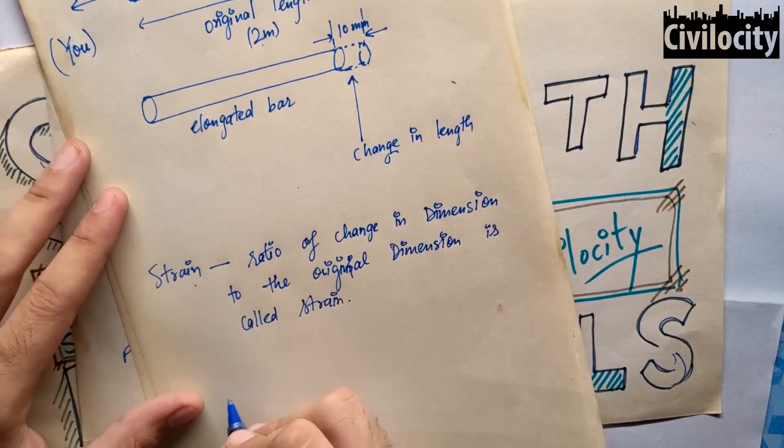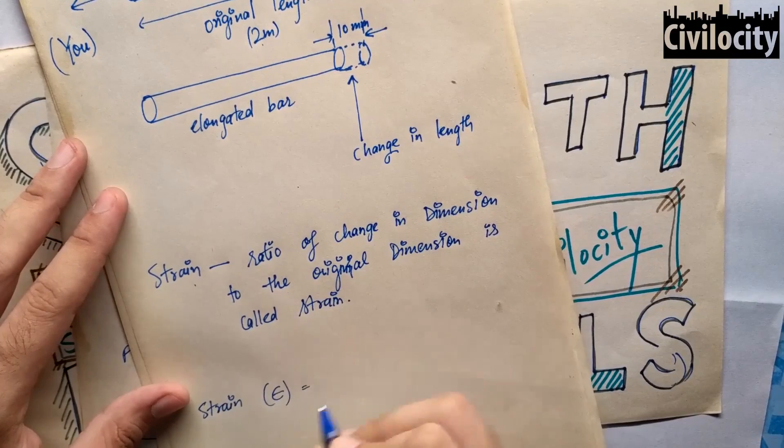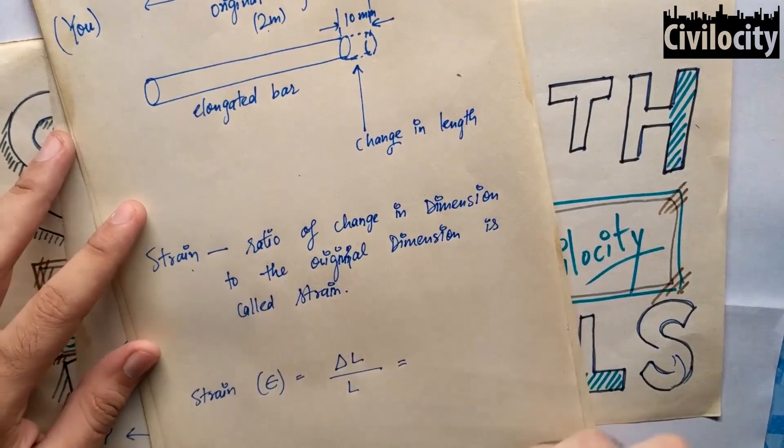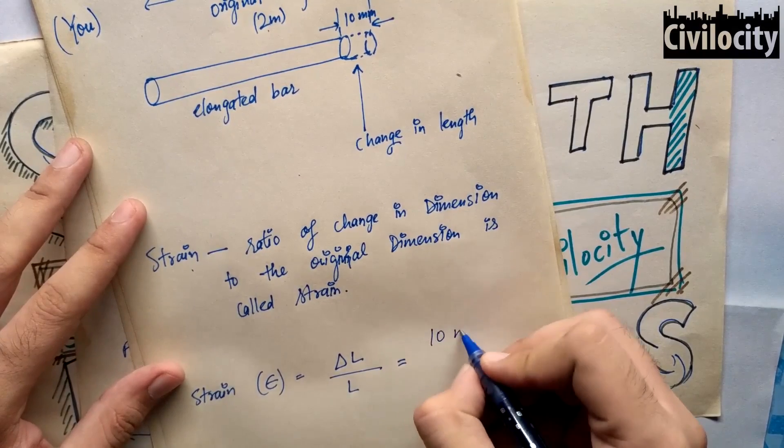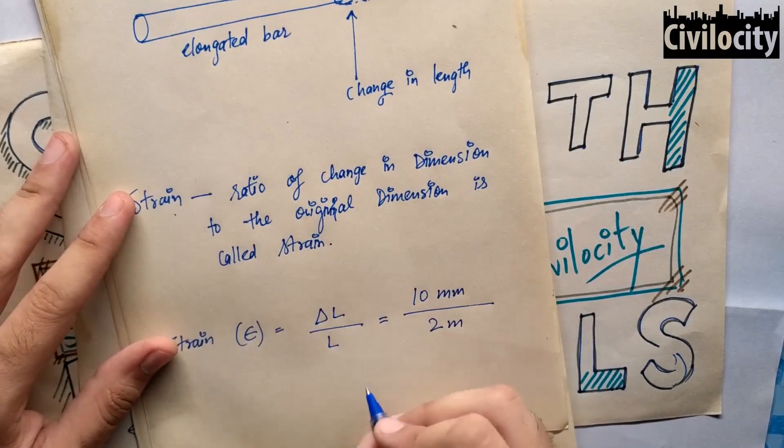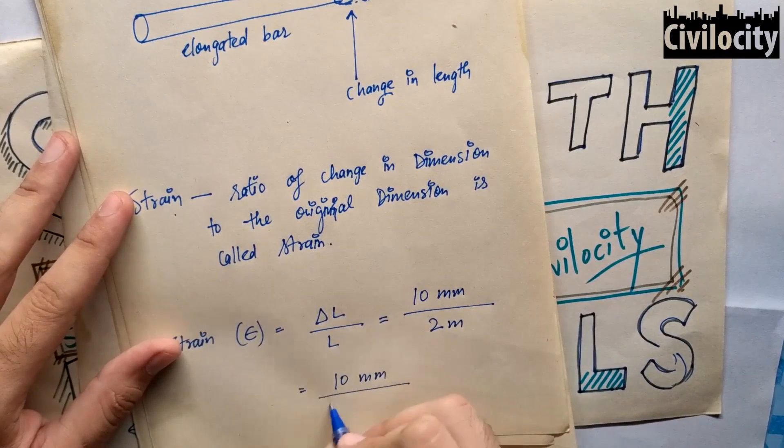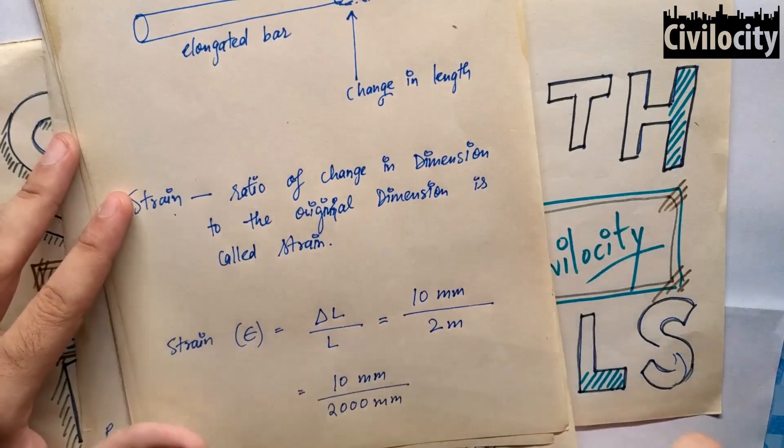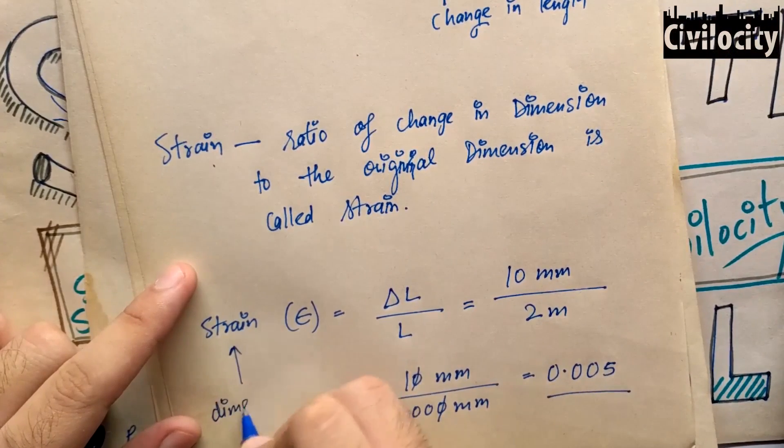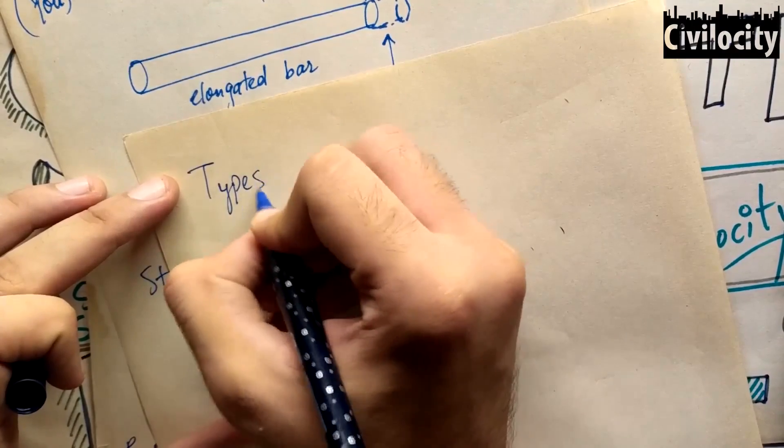When a body is subjected to some external force, there is some change of dimension of the body, and the ratio of change of dimension to the original dimension is known as strain. In our case, we had a bar which is axially loaded, and the elongation or shortening of axially loaded members per unit length is known as strain. It is represented by this letter E, and can be written as change in length divided by the total length. The strain produced in your bar will be 10 millimeters divided by 2 meters. It is a dimensionless quantity, and can be tensile or compressive depending upon the nature of load.